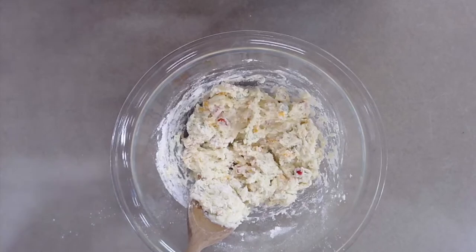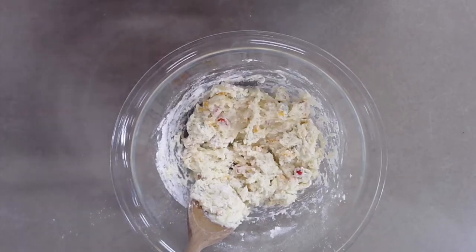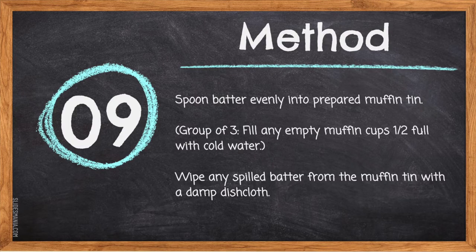Just mix until you notice all the dry ingredients are moistened. The batter should still look very thick, lumpy, and coarse — this is a good quality of a drop batter. If the batter is runny, you have over-mixed it.